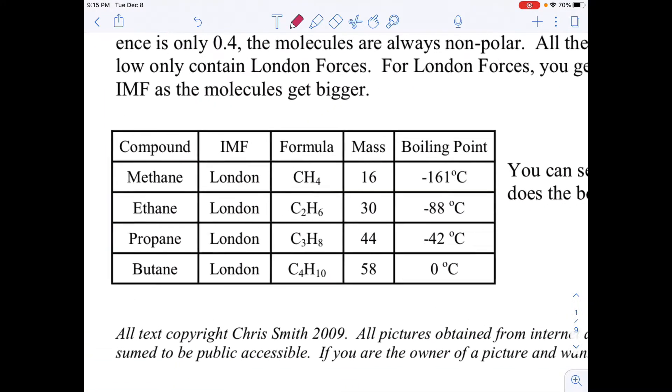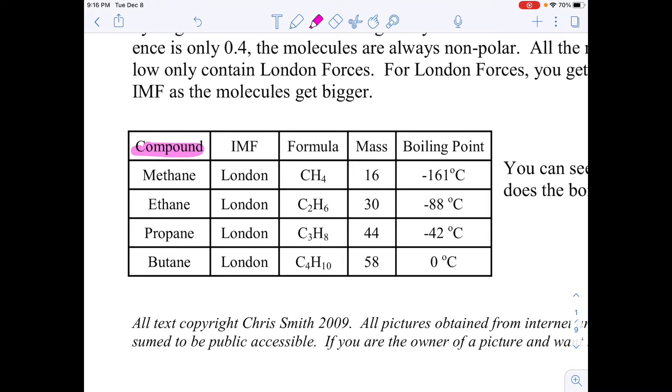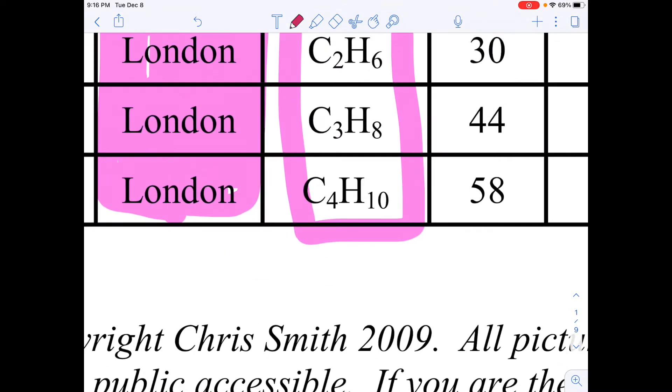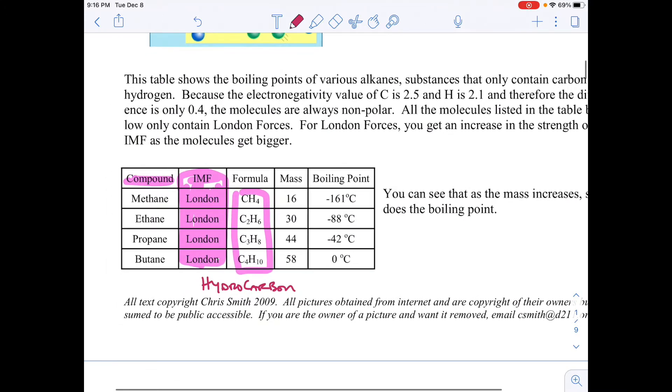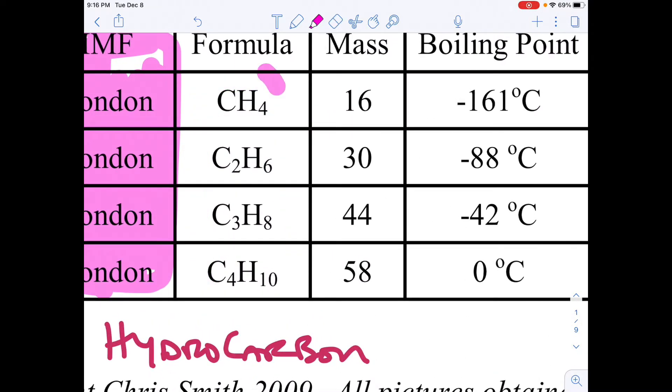I move down, I see this data table. I have a bunch of compounds. All of their IMFs, they are all London forces, so there's nothing different there. They're all the same type of bond. One easy way, remember, when it's just carbon and hydrogen, those are called hydrocarbons. Any time you have a hydrocarbon, it is non-polar, meaning it's going to form a London bond, London force.